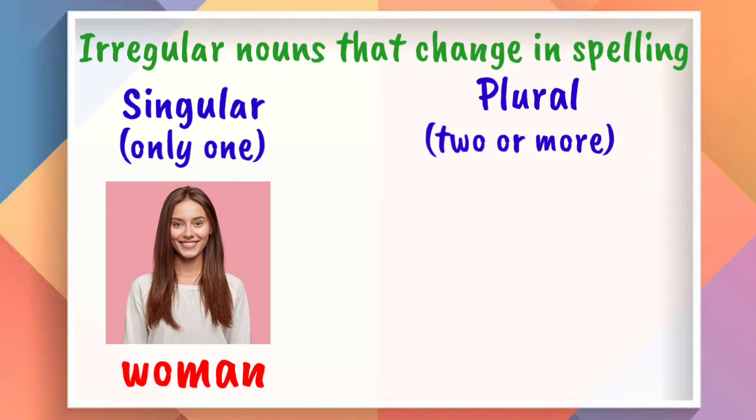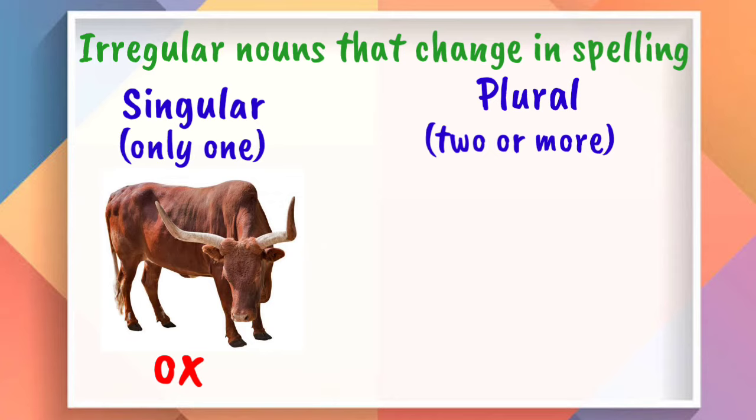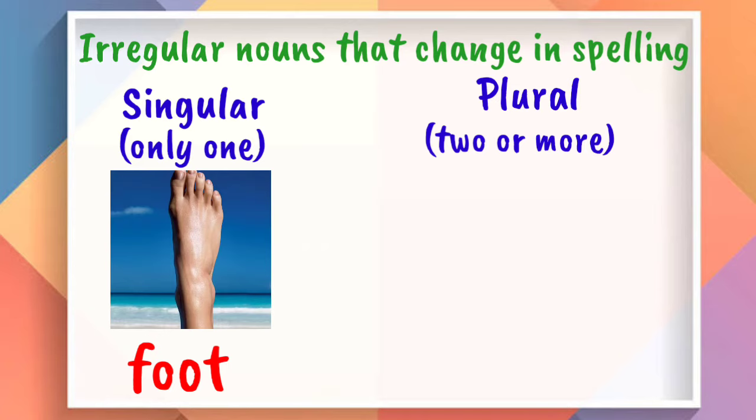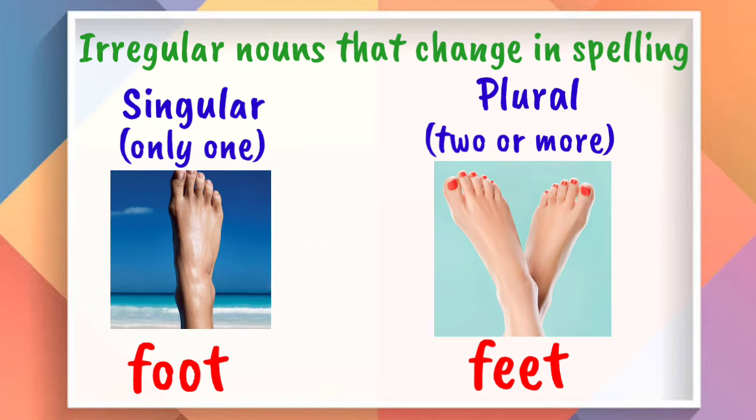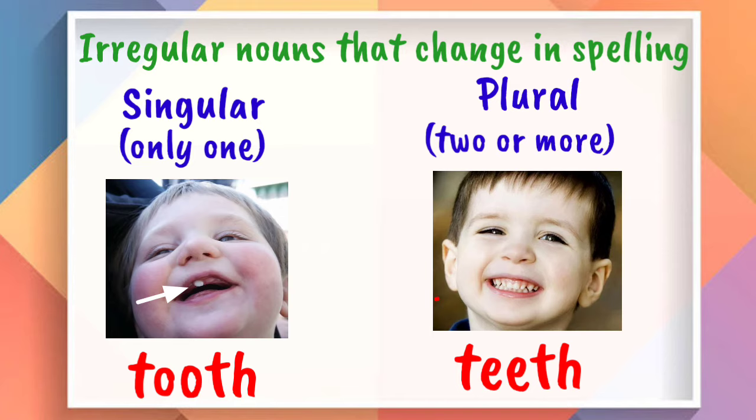Ox. The plural form of ox is oxen. Foot. Its plural form is feet. Next, tooth. It's teeth. Goose. Geese.